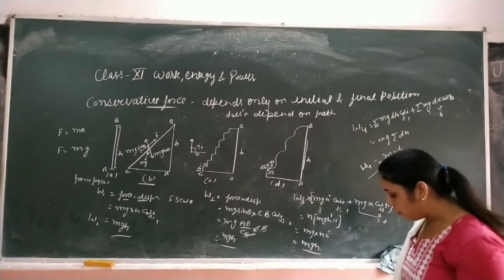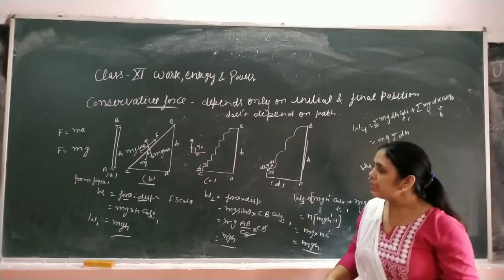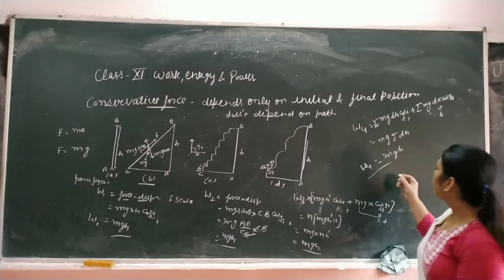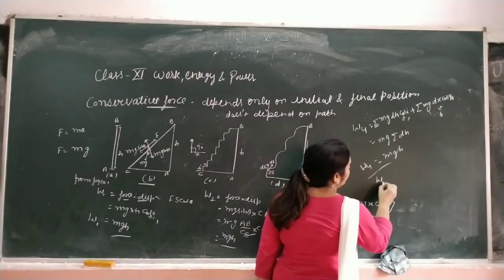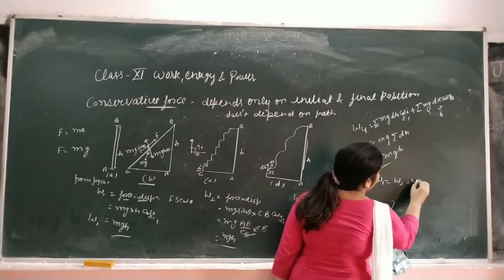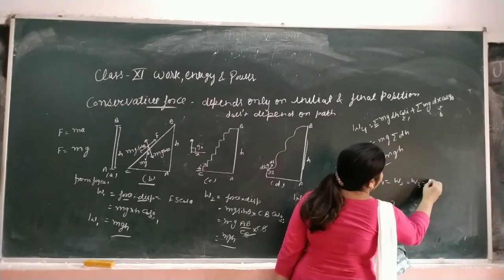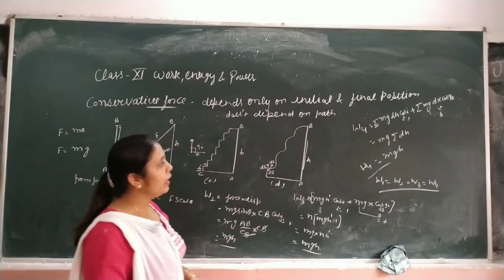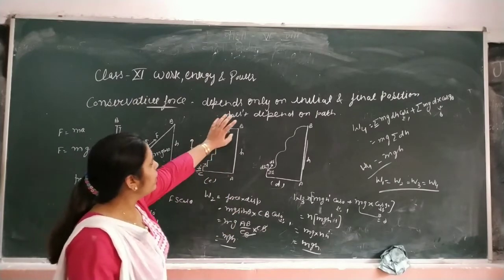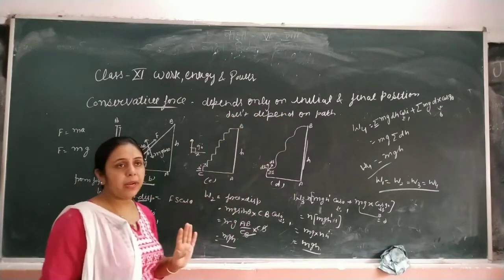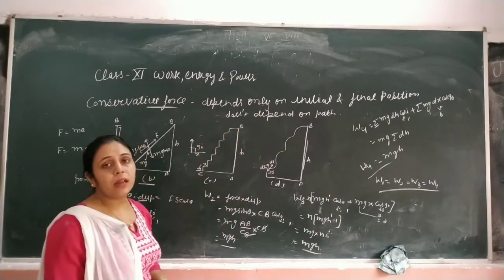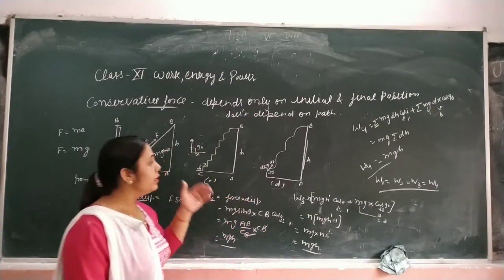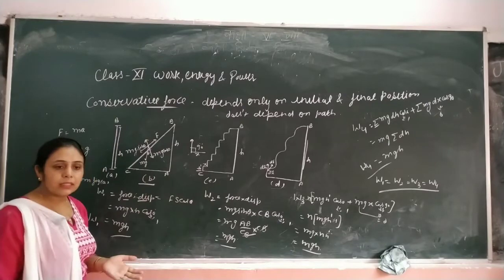In all four cases we see that work done is the same: W1 = W2 = W3 = W4. This shows that force depends only on initial and final points, not on the path - work done is same in all cases. Then we can say that force is conservative.